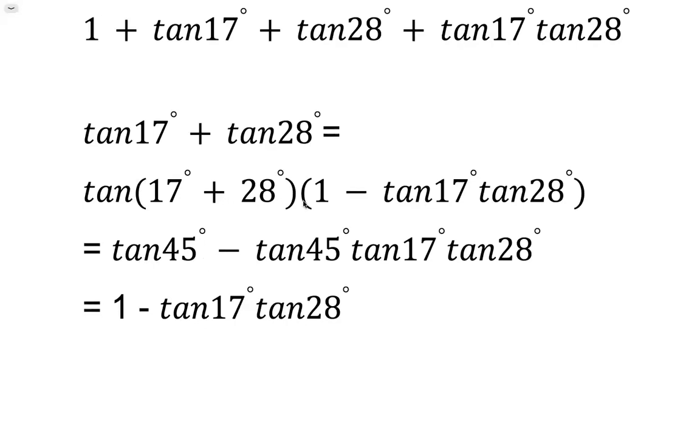So we have tangent 45 times 1. Tangent 45, that's 1. Now we have tangent 45 times negative tangent 17 tangent 28, so we get this. But the tangent 45 is 1. So this we get 1 minus tangent 17 times tangent 28.